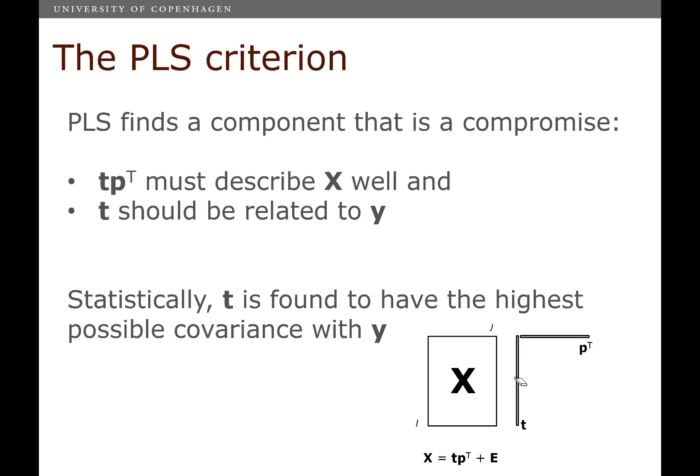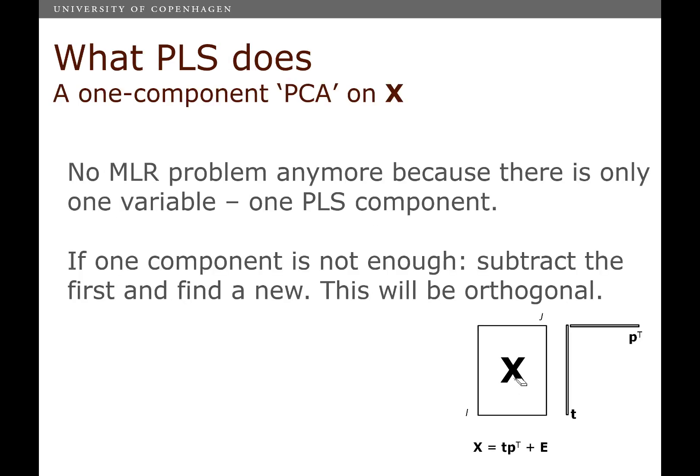Now, you can also imagine that if one component is not enough, we may need to extract more than one component. So that's basically what we do. First, we find the first PLS component, the one that has the highest covariance with Y. And then we subtract that information from both X and Y